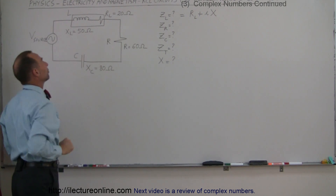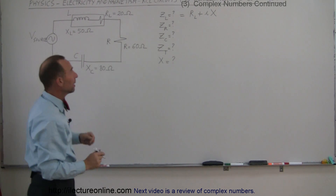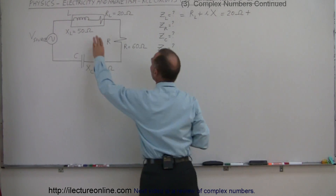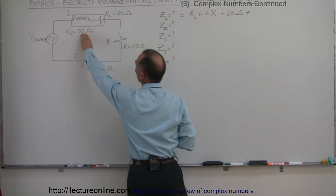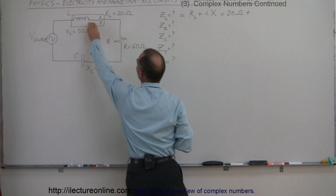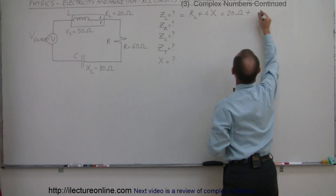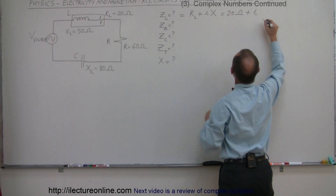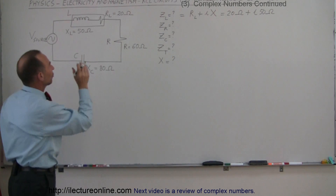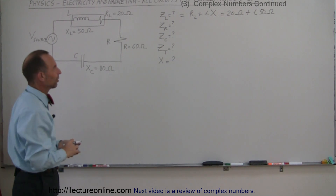These values are definitely dependent upon the frequency of the source, so if the frequency changes, these numbers will change. For this particular source and frequency, we take the values as they are. The inductor impedance will be equal to 20 ohms plus, because the inductor's opposition to current leads that of the capacitor, the voltage drop across the inductor happens first, then the resistor, then the capacitor. So we have a plus imaginary part of 50 ohms — that is the total impedance of the inductor with its internal resistance.